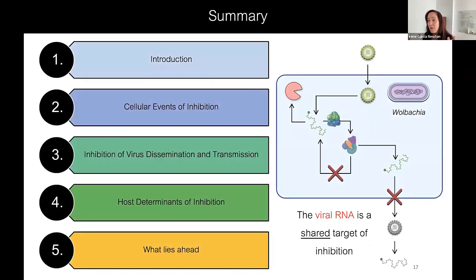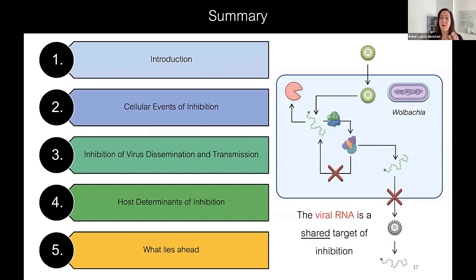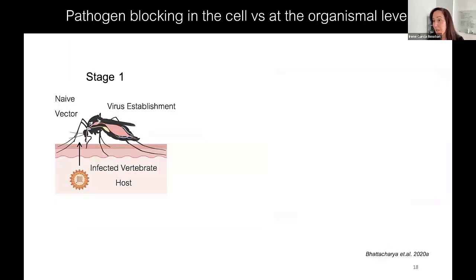That segment led us to conclude that viral RNA is a shared target of inhibition across Wolbachia-host-virus combinations. Because we see commonalities in the virus genome types inhibited by Wolbachia, and because the virus genome is modified in the presence of Wolbachia to become less infectious in the next generation, it's suggested to us that viral RNA might be the target for Wolbachia-mediated pathogen blocking. But what does this look like at an organismal level in a whole mosquito?